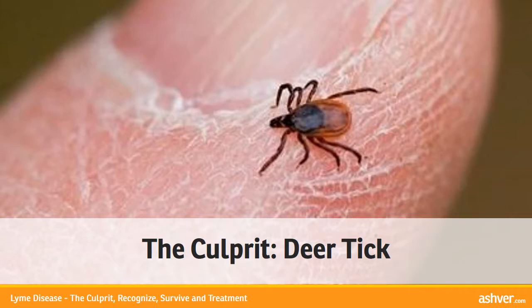Highest larval activity happens in August, when larvae attach and feed on a large number of mammals and birds, primarily on white-footed mice, Peromyscus leucopus. After feeding for three to five days, engorged larvae drop from the host to the ground, where they overwinter under leaves.